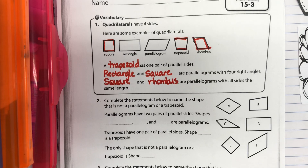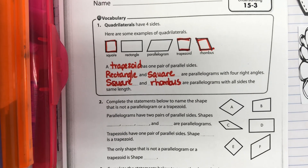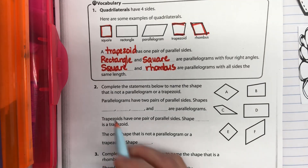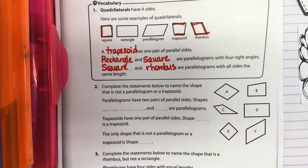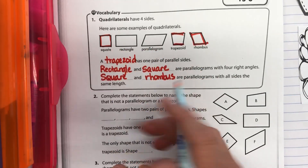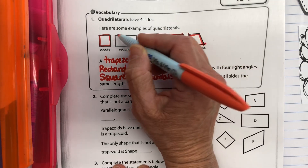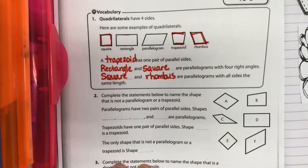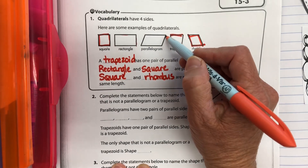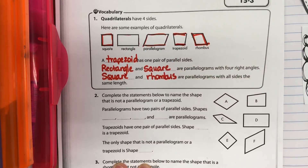Complete the statements below to name the shape that is not a parallelogram or a trapezoid. Parallelograms have two pairs of parallel sides — this side and that side are parallel, and those two are also parallel. So in a parallelogram we have two pairs of parallel sides.